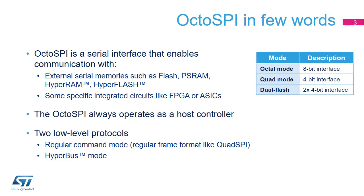The Octo SPI is a serial interface that enables communication with serial memories. The following protocols are supported: Serial Flash, PSRAM, HyperRAM, and HyperFlash. The Octo SPI always operates as a host controller, initiating the data transfer to the memory. Two low-level protocols are implemented: regular command mode, which is an extension of Quad SPI, and HyperBus protocol. Three types of interfaces are supported: 8-bit, 4-bit, and 2x4-bit.